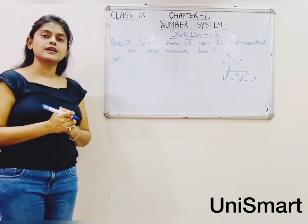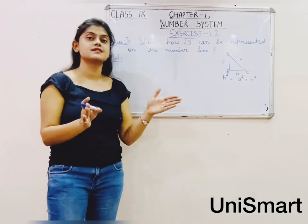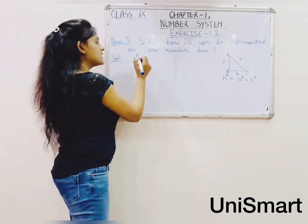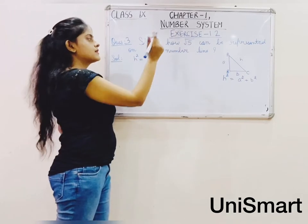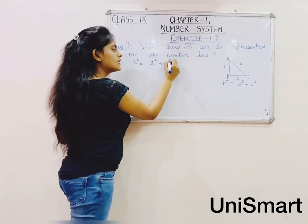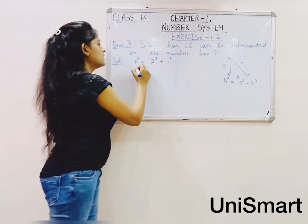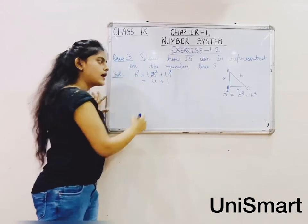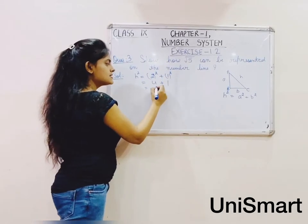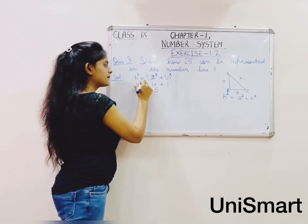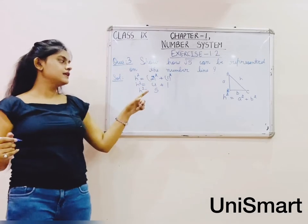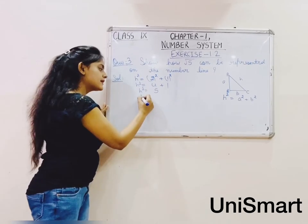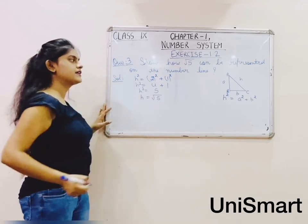I need to find the hypotenuse value equal to root 5. I can break it as: H squared equals 2 squared plus 1 squared, which is 4 plus 1 equals 5. Taking the square root, H equals root 5. So the value of the perpendicular A is 1 and the base B is 2.